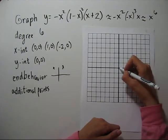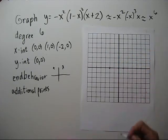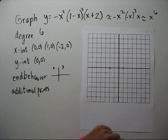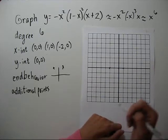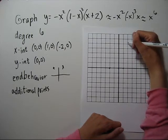Let's graph our intercepts. Now our end behavior is up at both ends. So I know that somewhere I'm going to be going up.